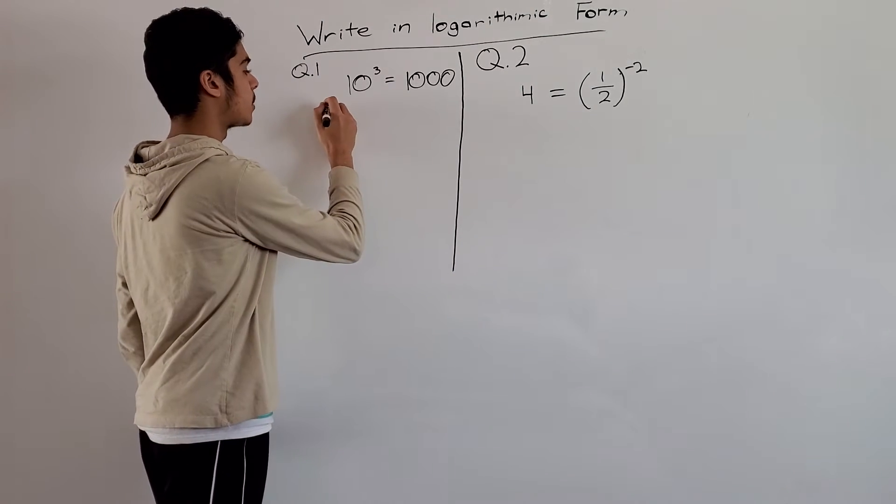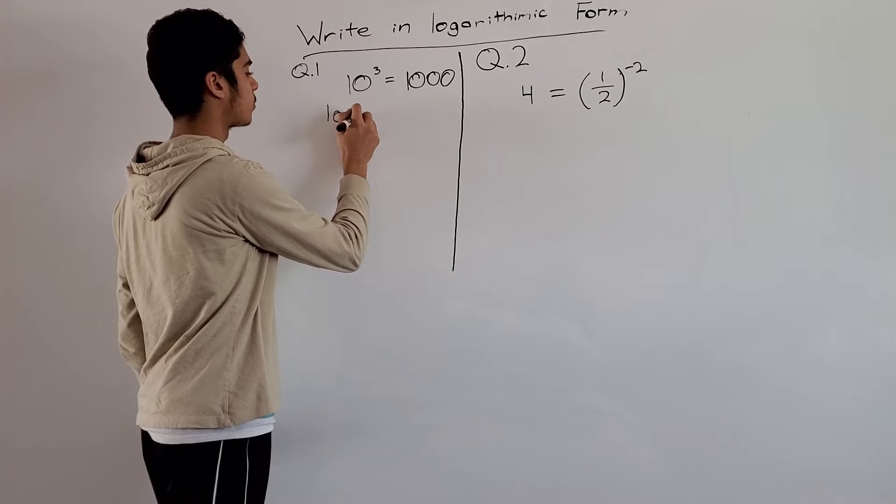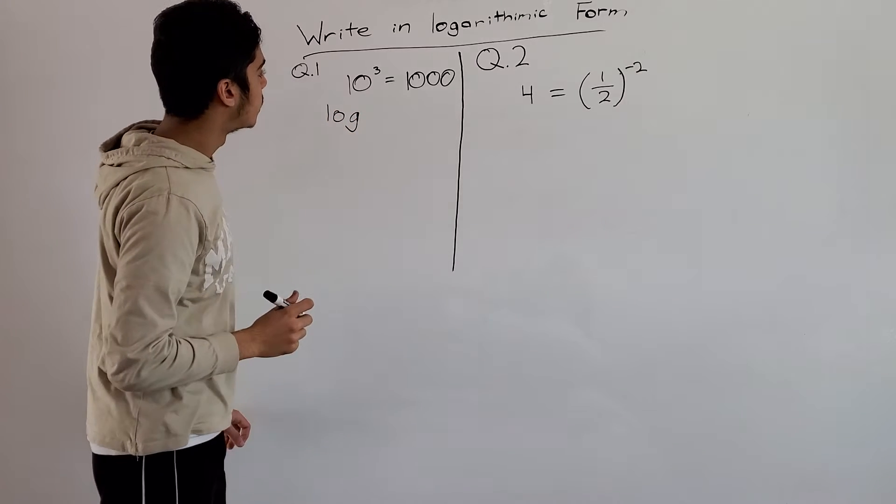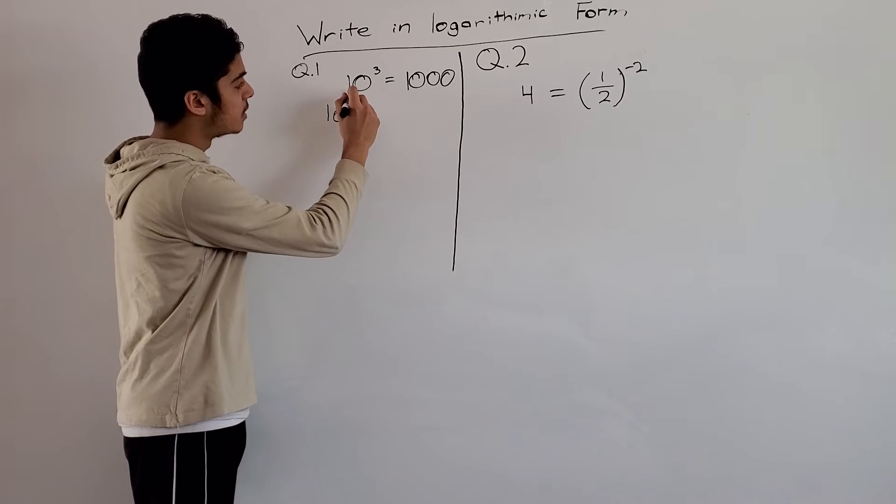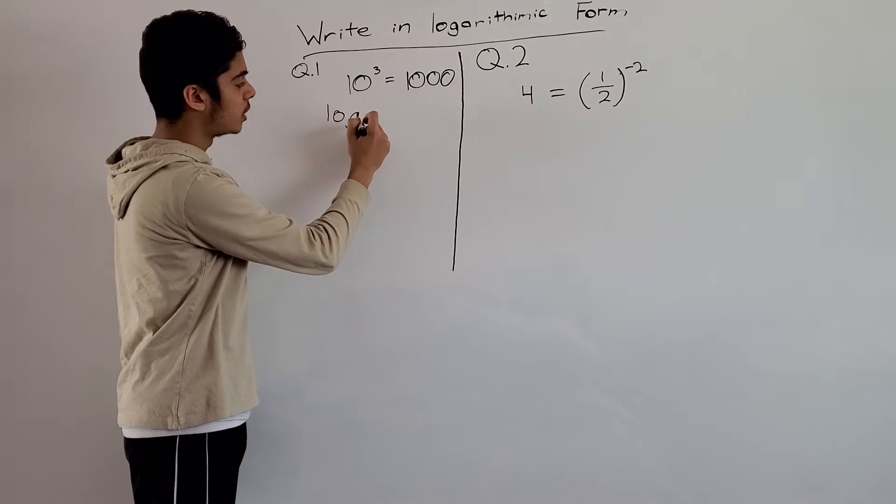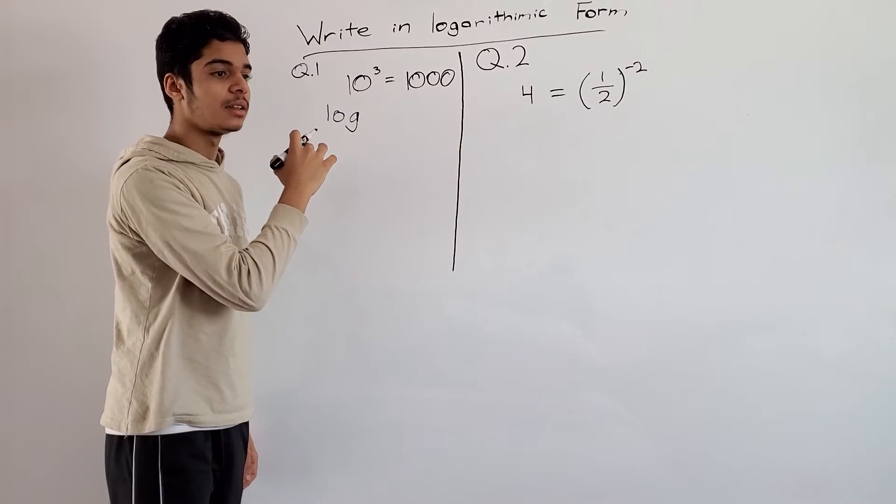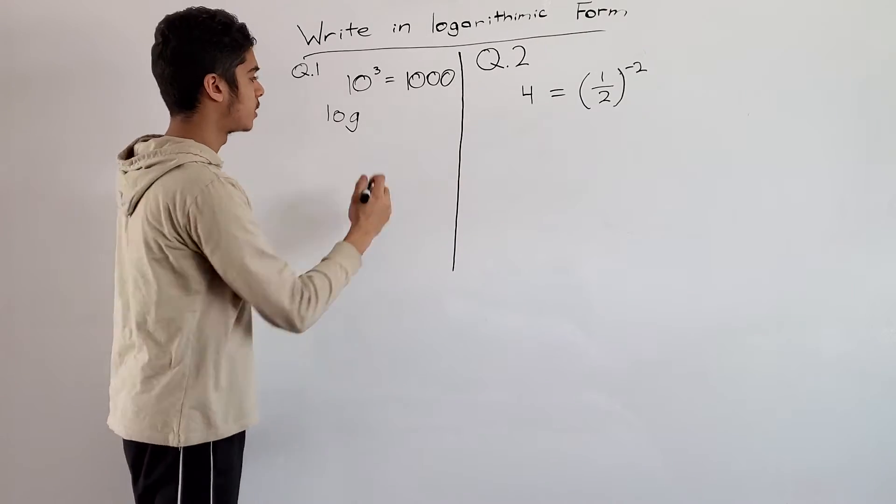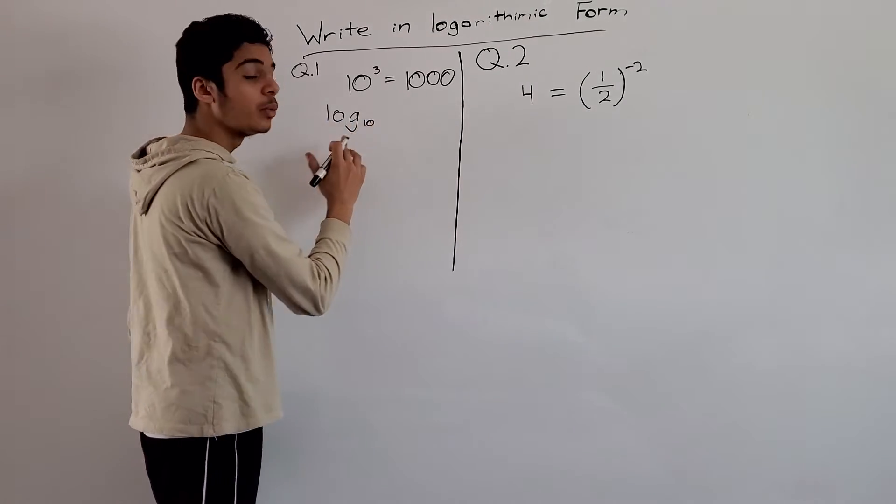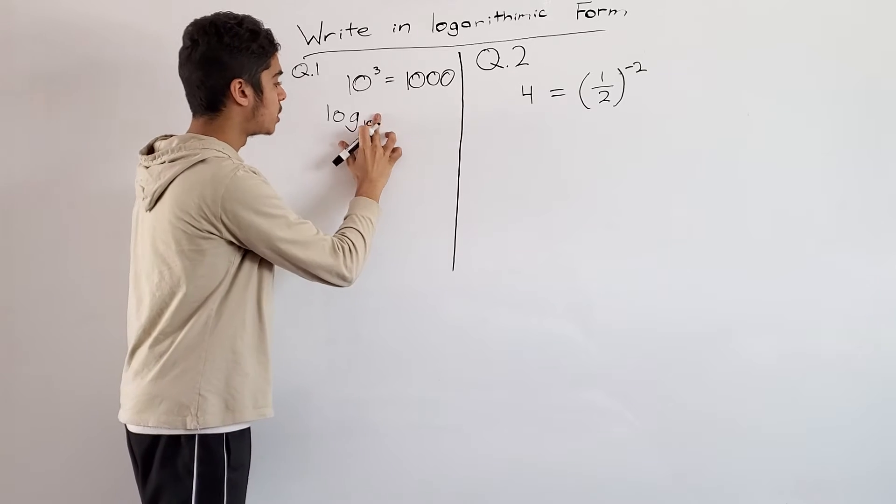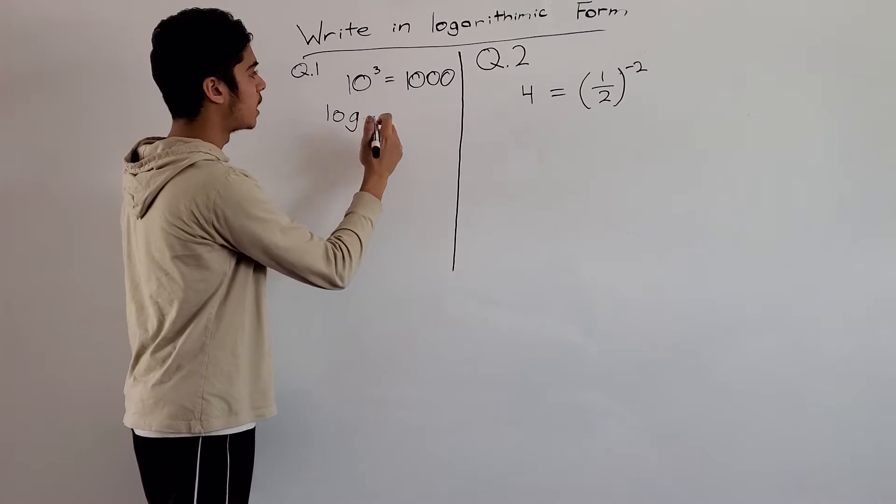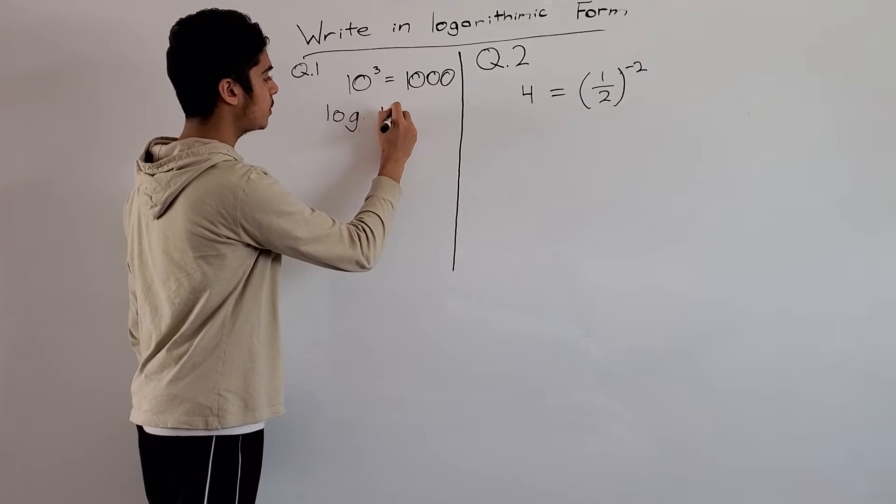First we start off by writing log. And then this number would go here, but because it's 10, that is the common log. 10 goes here - we don't write that. So we just leave it alone and would just write 1,000.